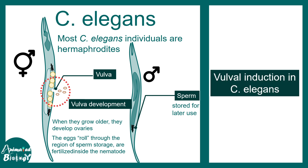But before we start we should understand why we should be bothered about learning a process in C. elegans that is not at all a human. In that context, I would like to suggest that this particular development or induction of vulva is a nice coordination of two fundamental signaling schemes. Paracrine and juxtacrine signaling coordinate with each other in this developmental process.